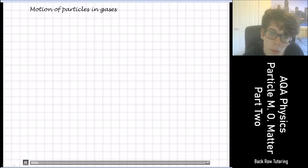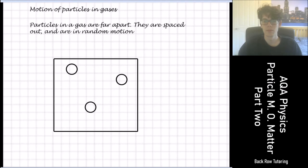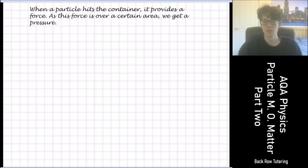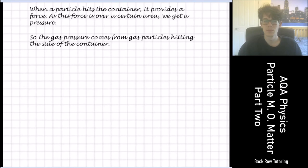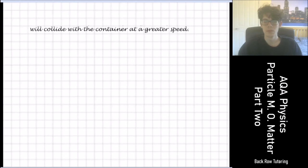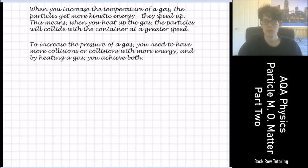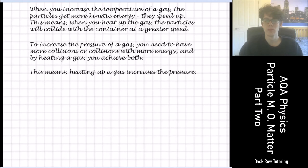Particles in a gas are far apart, spread out, and in random motion. When a particle hits the container, it provides a force; as this force acts over a certain area, we get pressure. So gas pressure comes from gas particles hitting the sides of the container. When you increase the temperature of a gas, the particles get more kinetic energy and speed up, colliding with the container at greater speed. To increase the pressure of a gas you need more collisions or collisions with more energy — by heating a gas, you achieve both. Heating up the gas therefore increases the pressure.